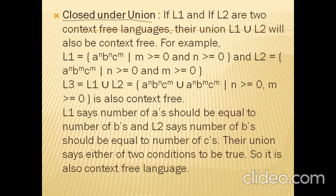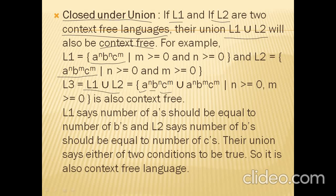Closed under union: if L1 and L2 are two Context-Free Languages, their union L1 union L2 is also context-free. For example, L1 = {A^N B^N C^M} and L2 = {A^N B^M C^M}. L1 says the number of A's equals B's; L2 says B's equal C's. Their union says either condition holds, so the result is also a CFL. Closed under concatenation: if L1 = {A^N B^N} and L2 = {C^N D^N}, then L1 concatenated with L2 is also a CFL.